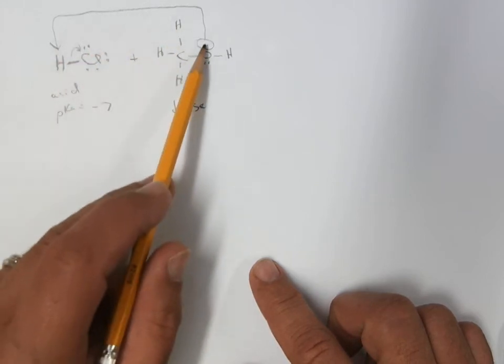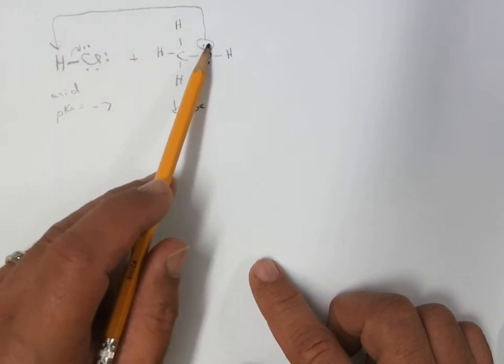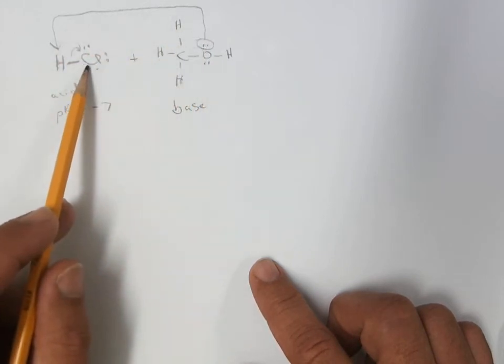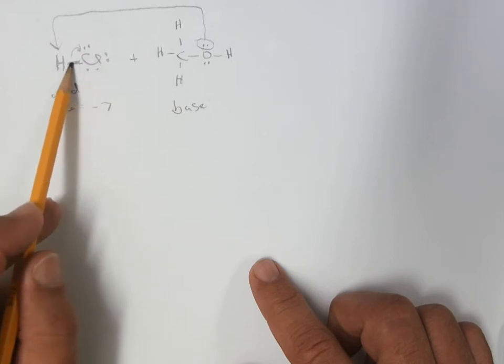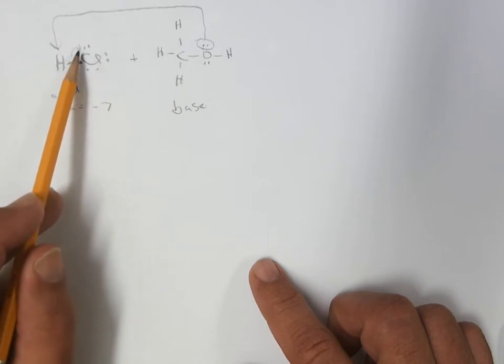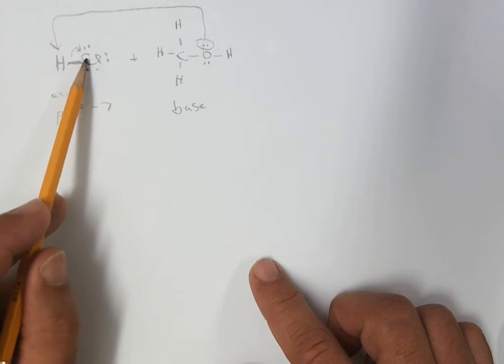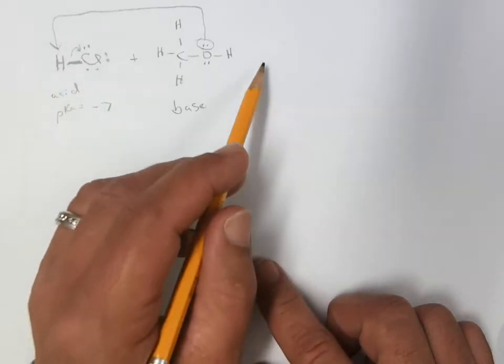So really the HCl goes over and smacks into this. The H stays here, and the Cl leaves with the electrons. So this arrow here indicates that this bonding pair of electrons turns into a lone pair on the chlorine.